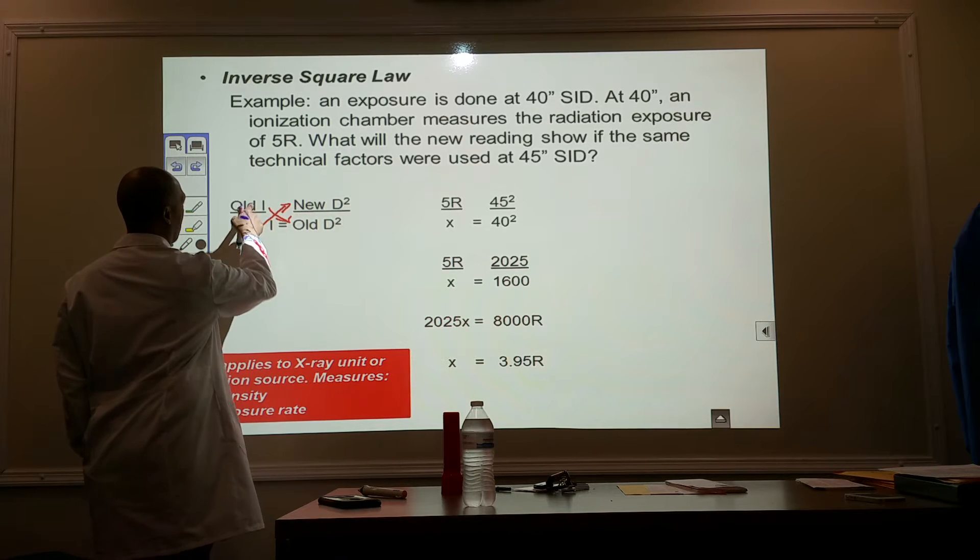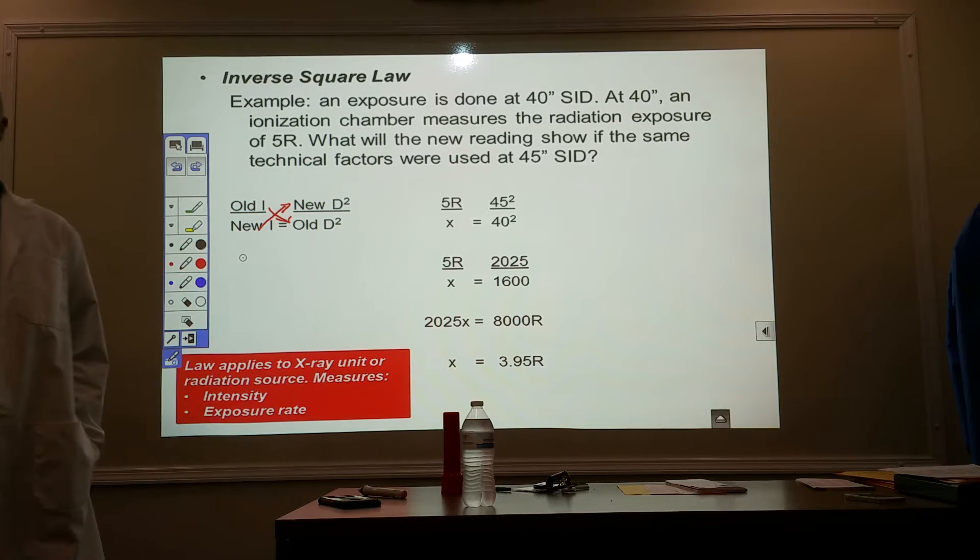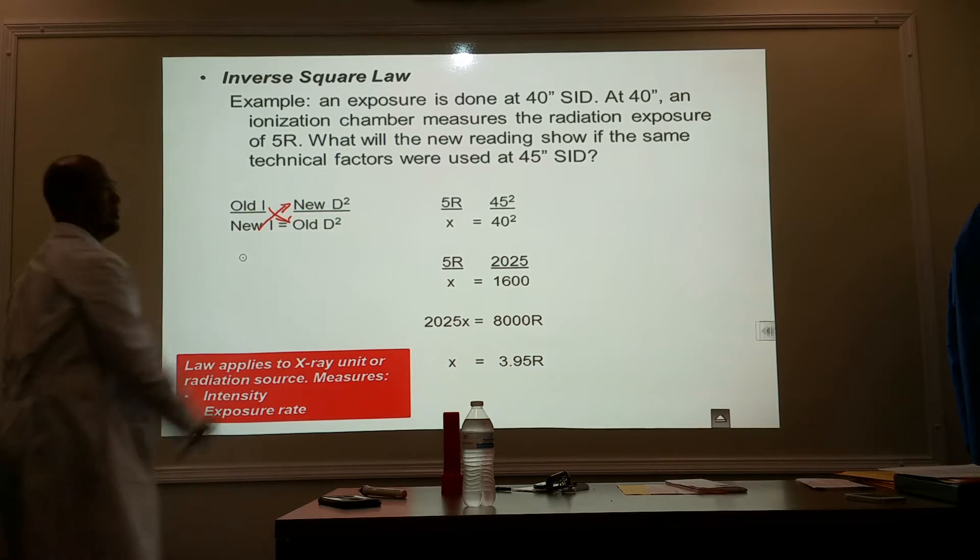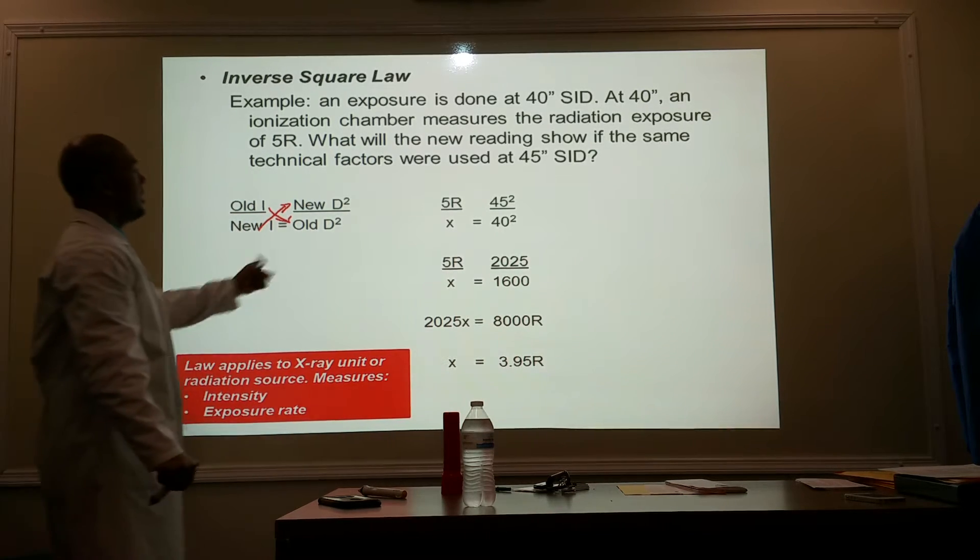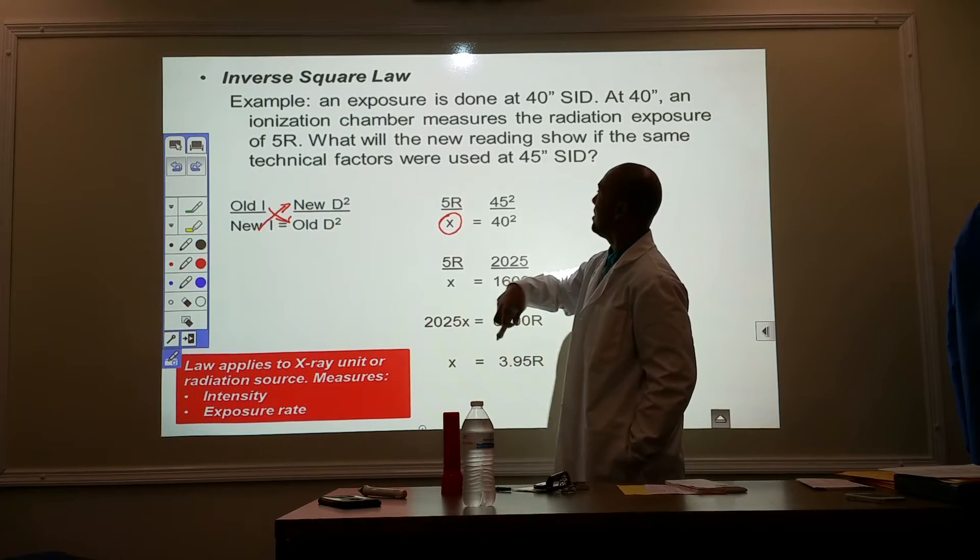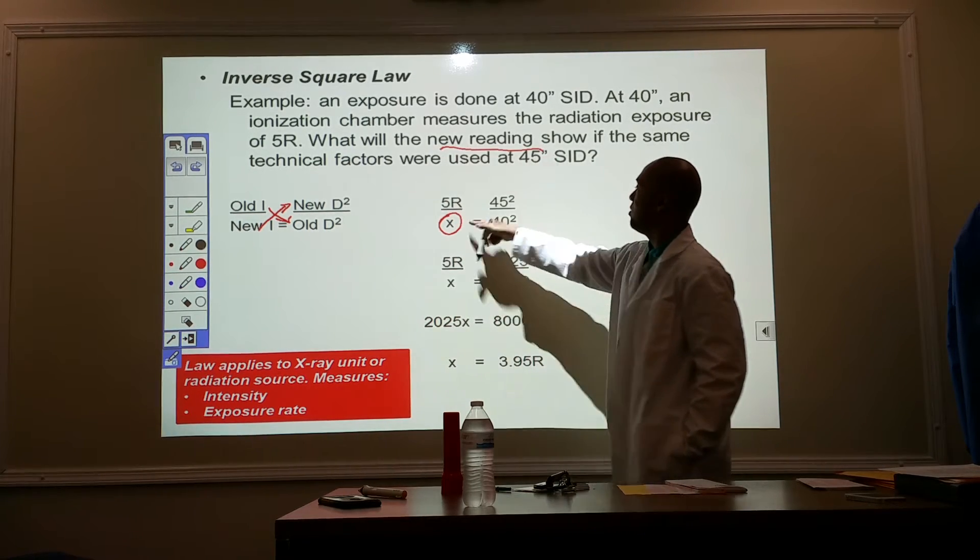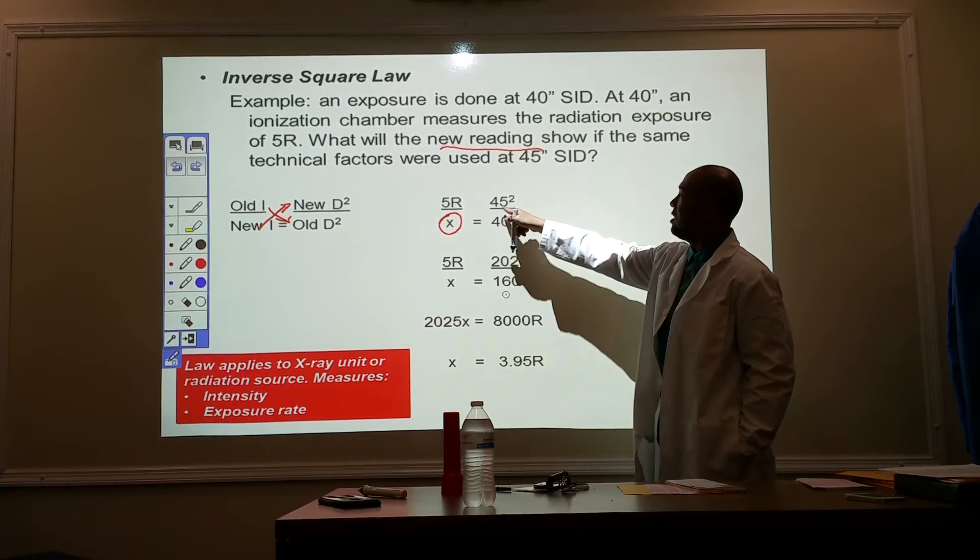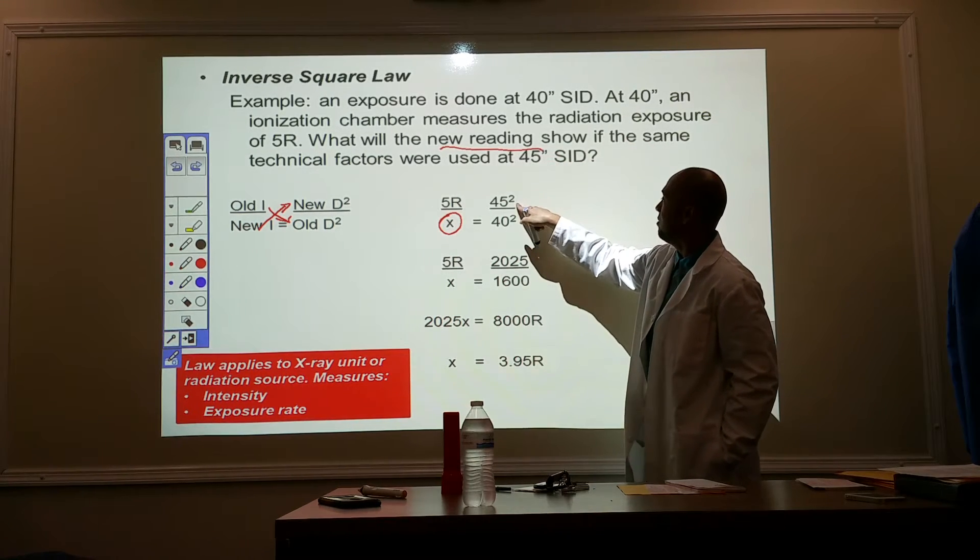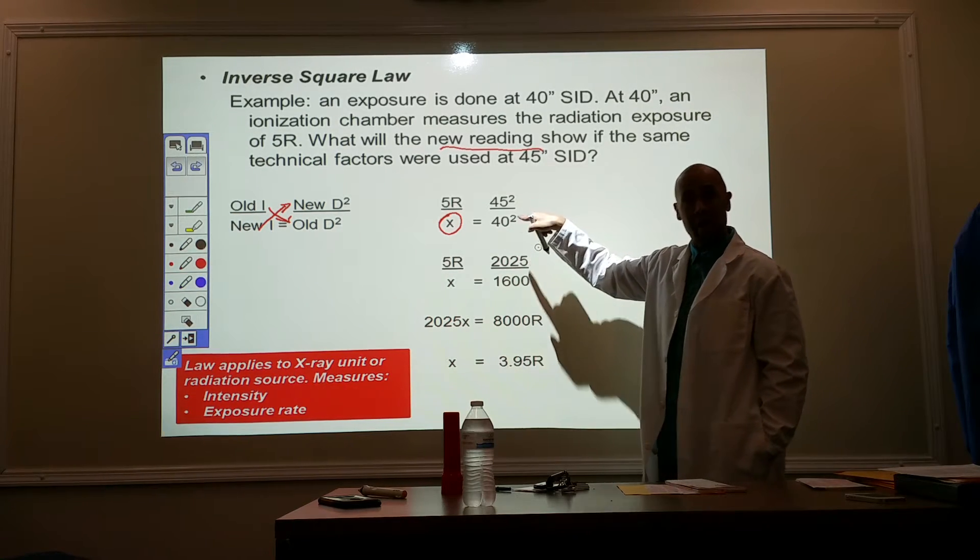Trying to teach you guys how to recognize patterns. Old to new, new to old. All right? Let's plug in the numbers. Old intensity is 5R. We're looking for the new intensity. Because we're looking for the new reading. The new intensity is equal to new distance squared. That's the new distance we're going to apply this formula to. Over the old distance squared of 40 squared.